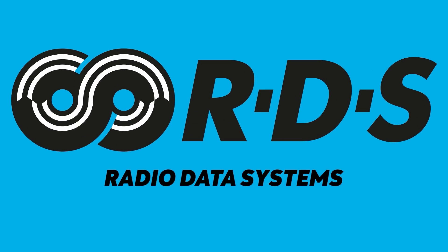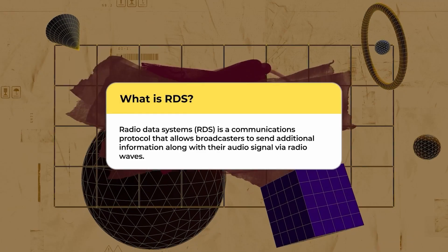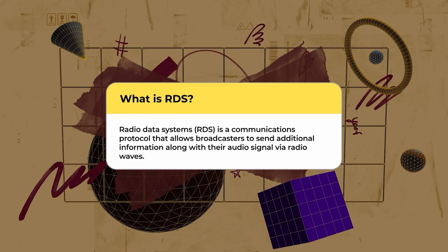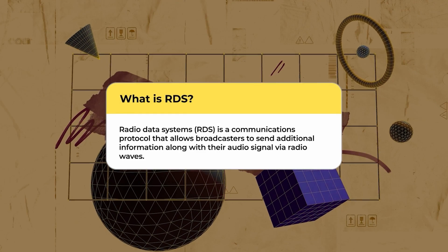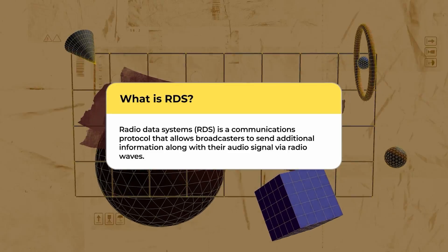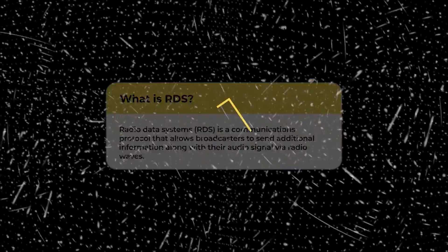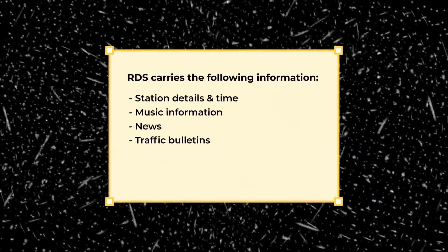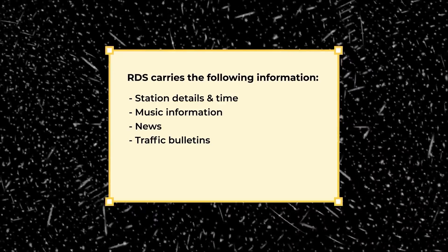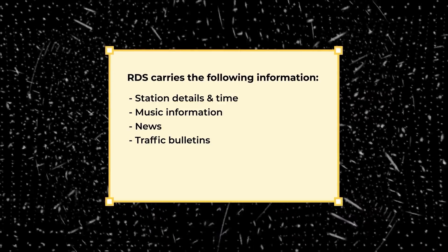Enter Radio Data Systems — a communications protocol that allows broadcasters to send additional information, along with their audio signal, via radio waves. Apart from the time and station details, this could be music-related information, news, or traffic bulletins.